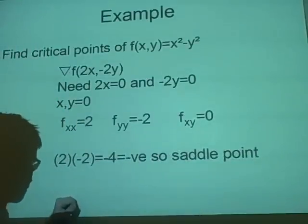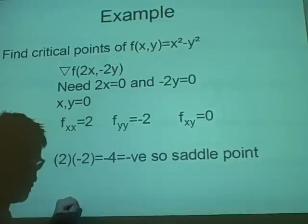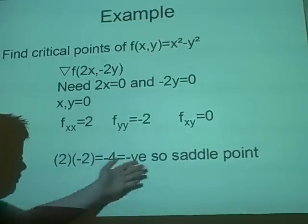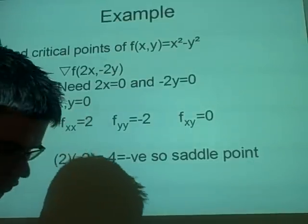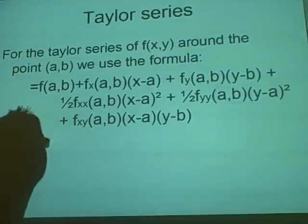And like we said in the previous, if it's a negative then it's a saddle point. So we have found a saddle point at the point zero, zero. Yeah? Good, good.